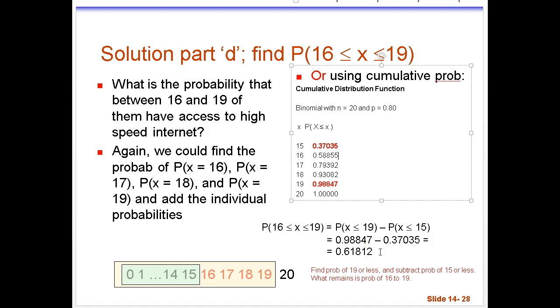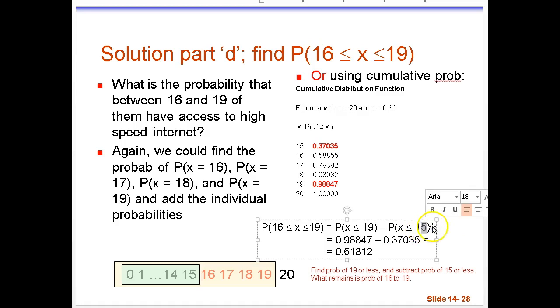Now you've got to be careful when you're doing these kinds of problems because I know it says 16 right here. And your general impulse is going to be to put the number 16 right here. But if you put the number 16 right here, you are going to be subtracting the probability of 16. But according to the question, we want to include 16, 17, 18, and 19.